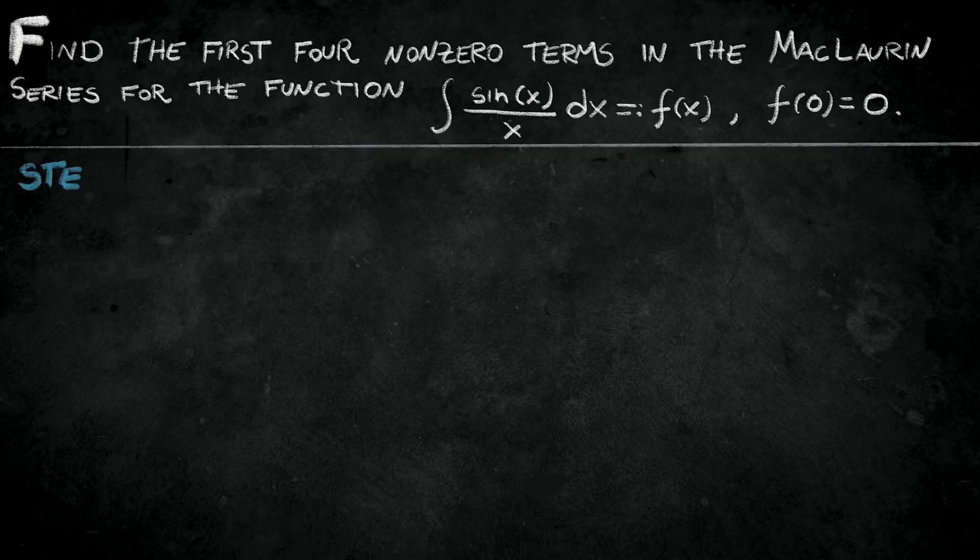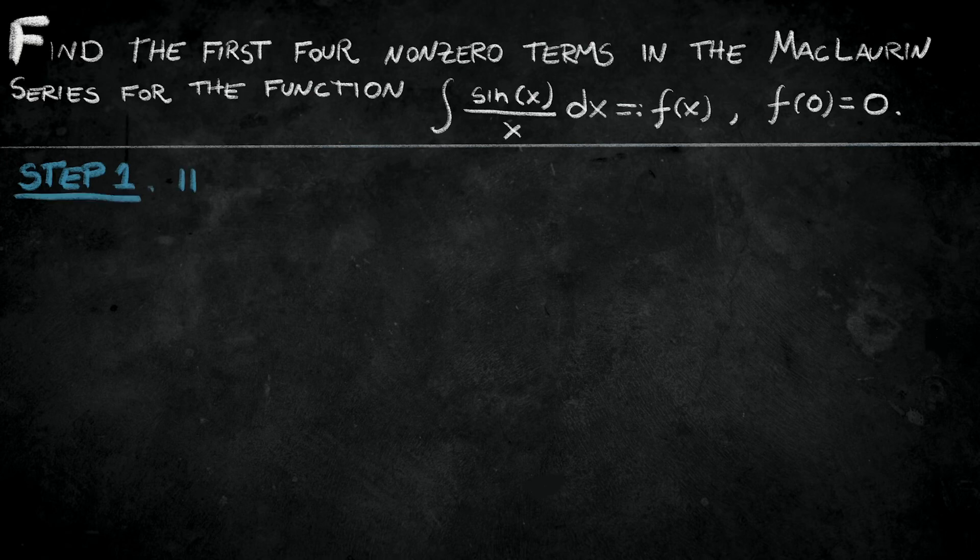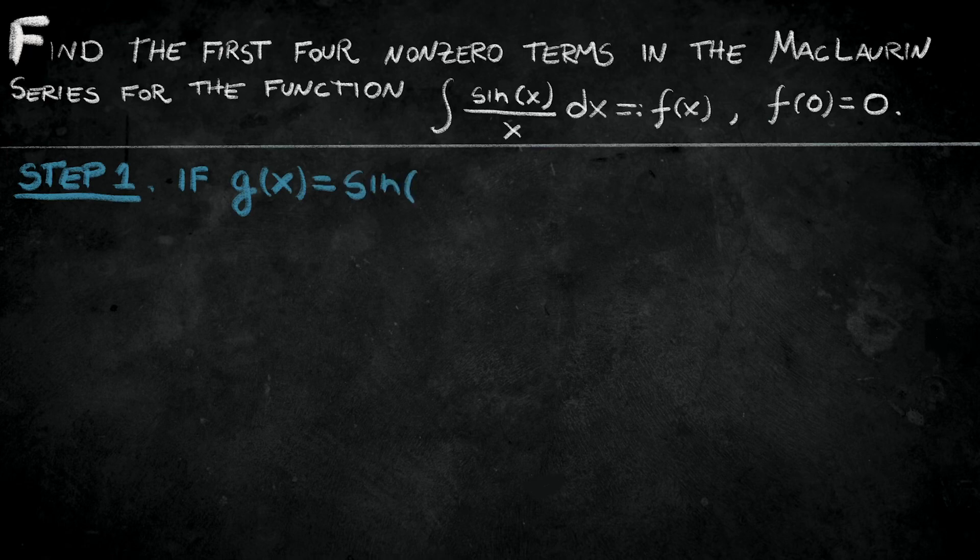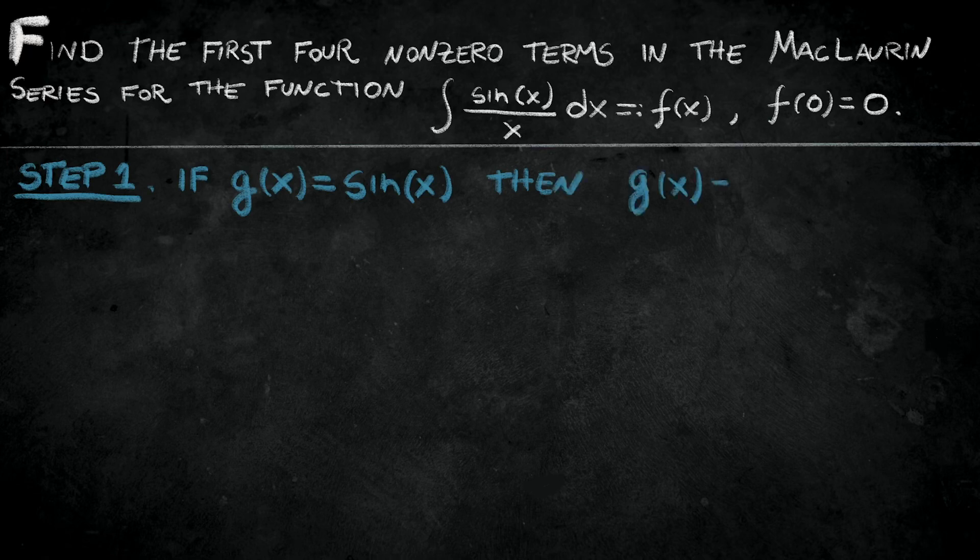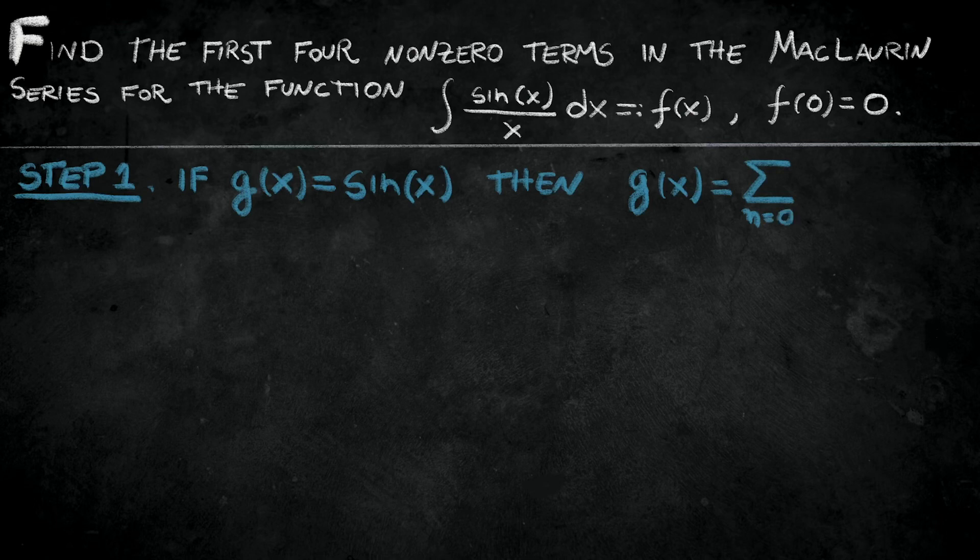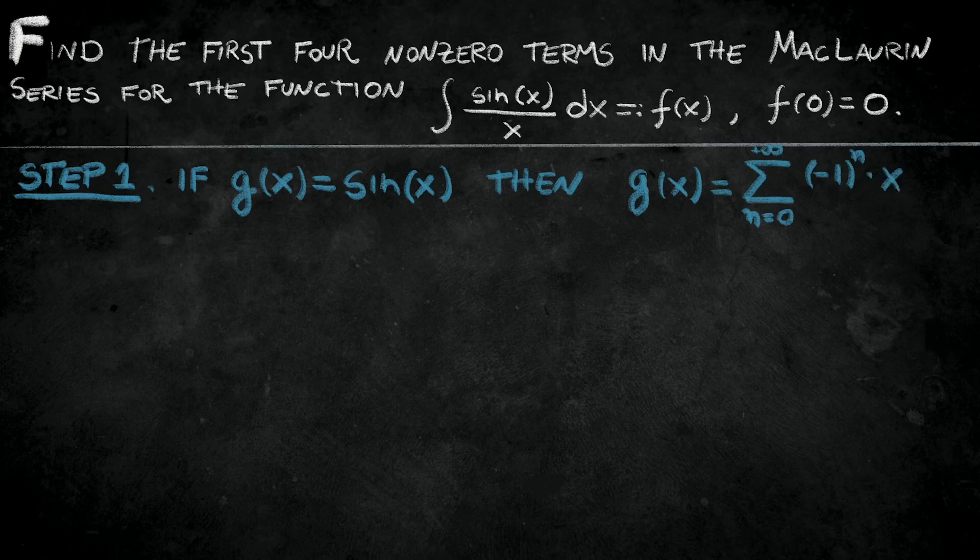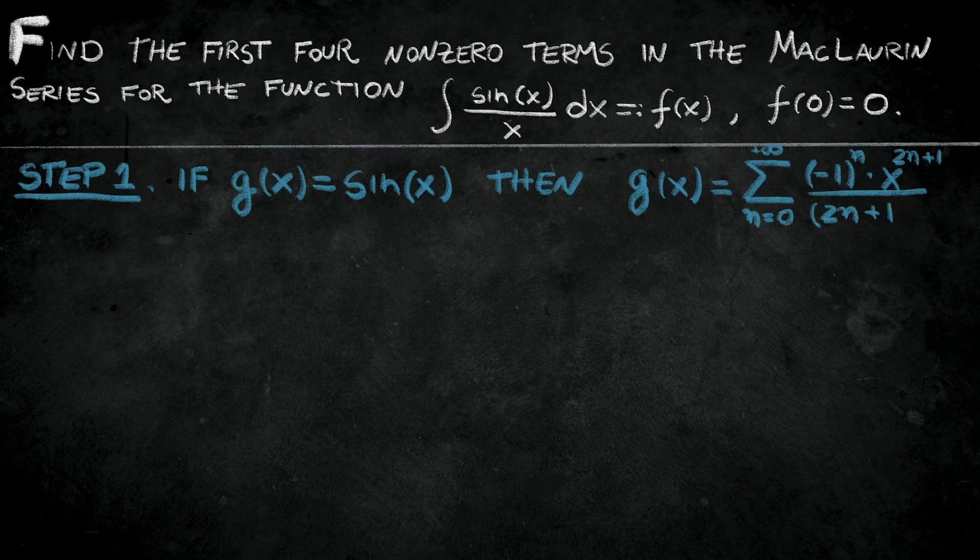Let's divide into a couple of steps. Step 1. If I call g of x equals sine of x, then I can write my function g as the following series: the series from n equals 0 to positive infinity of minus 1 to the power n times x to the power 2n plus 1 over 2n plus 1 factorial. How can I get that?